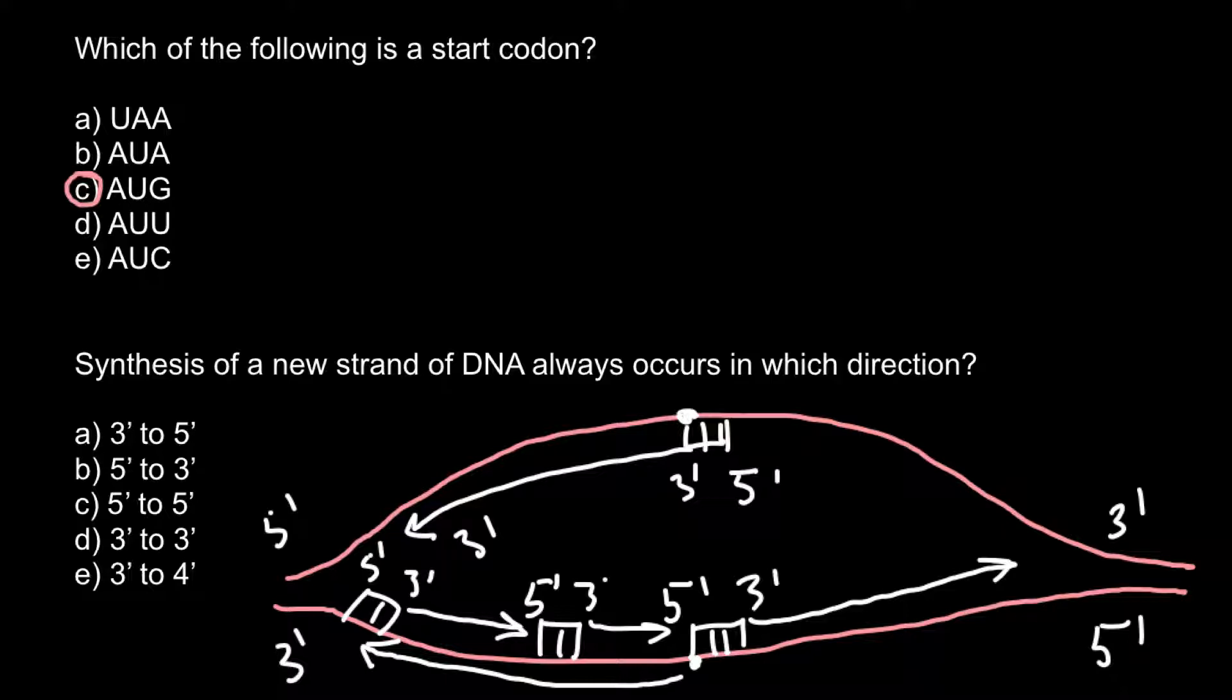So three prime end here. And here we would have the same picture as on the other strand of the DNA where growth also would be from five prime end to three prime end. So would grow in this direction.